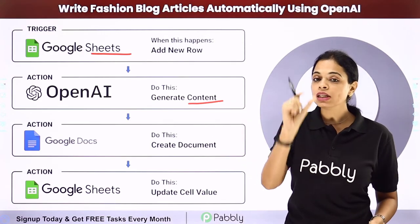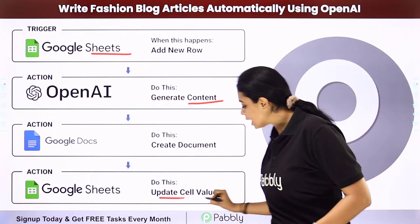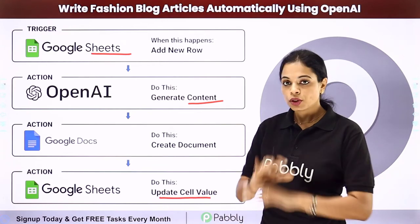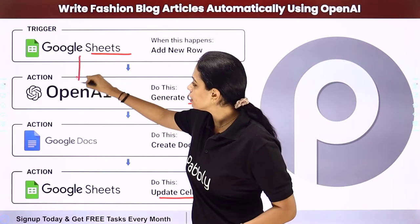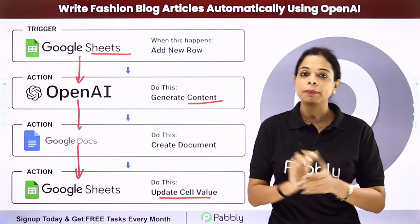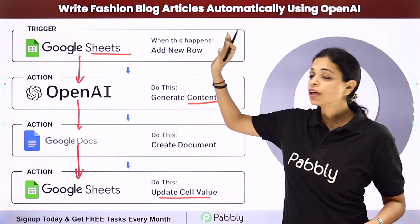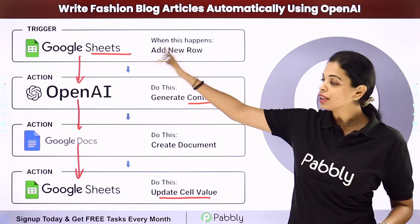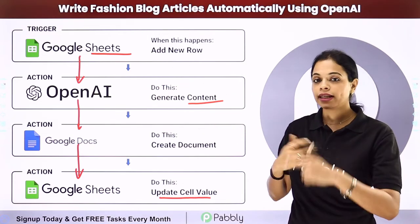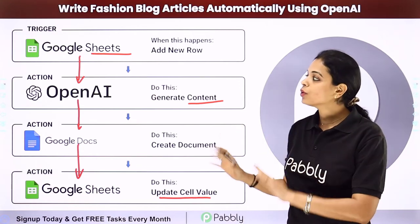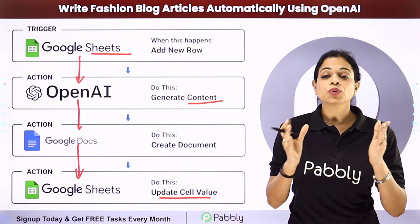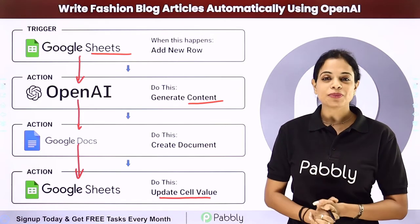Finally the link of the updated document should be updated as a cell value in your Google Sheet. To do this you will have to set up some integration between these applications and the same thing can be done using Pabbly Connect software. So here your trigger application would be Google Sheets and your action application would be OpenAI, Google Docs, and again Google Sheet. Now how can you do this yourself, integrate and automate this entire process? To understand that, let me take you to my screen.